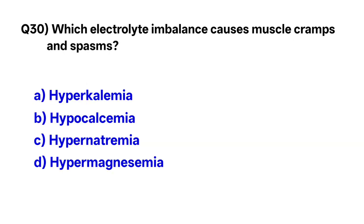Question number thirty: Which electrolyte imbalance causes muscle cramps and spasm? The correct option is B, hypocalcemia.